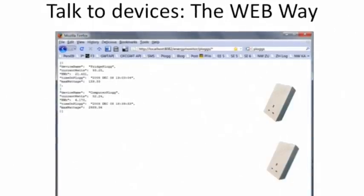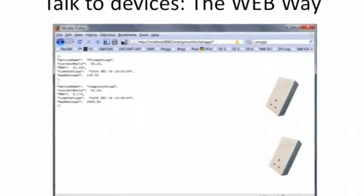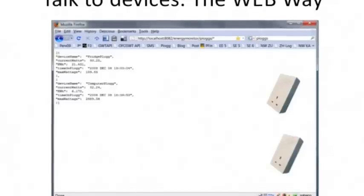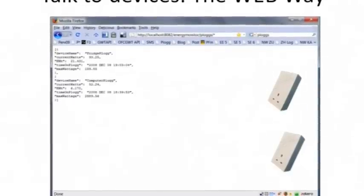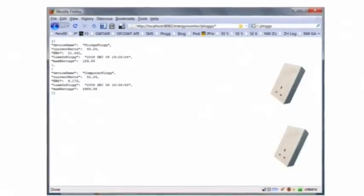Concretely, this means that all the plugs and the devices they monitor are accessible using URLs in a web browser. In this example, the URL returns the consumption of all the available plugs in a JSON format.